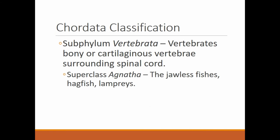Then we go to subphylum Vertebrata — these are the vertebrates. This is any organism that has their dorsal nerve cord surrounded by a vertebral column, which is where we get the term 'vertebrate.' The vertebrae encase, surround, and protect the dorsal nerve cord. This includes bony or cartilaginous vertebrae — for example, sharks have a cartilaginous skeleton but they form vertebrae that protect their spinal column.